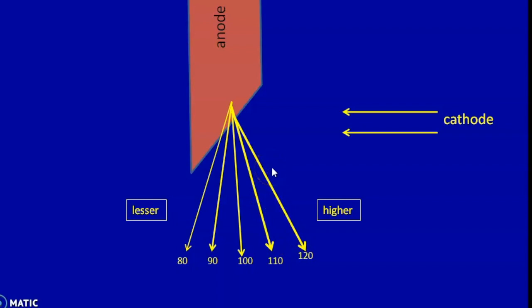Now we all together cannot eliminate the anode heel effect completely, but we can make use of this during patient positioning such that the thicker body part is placed towards the cathode side and the thinner less dense part is placed towards the anode side which consists of less intense beams. Thereby we achieve a uniform exposure.